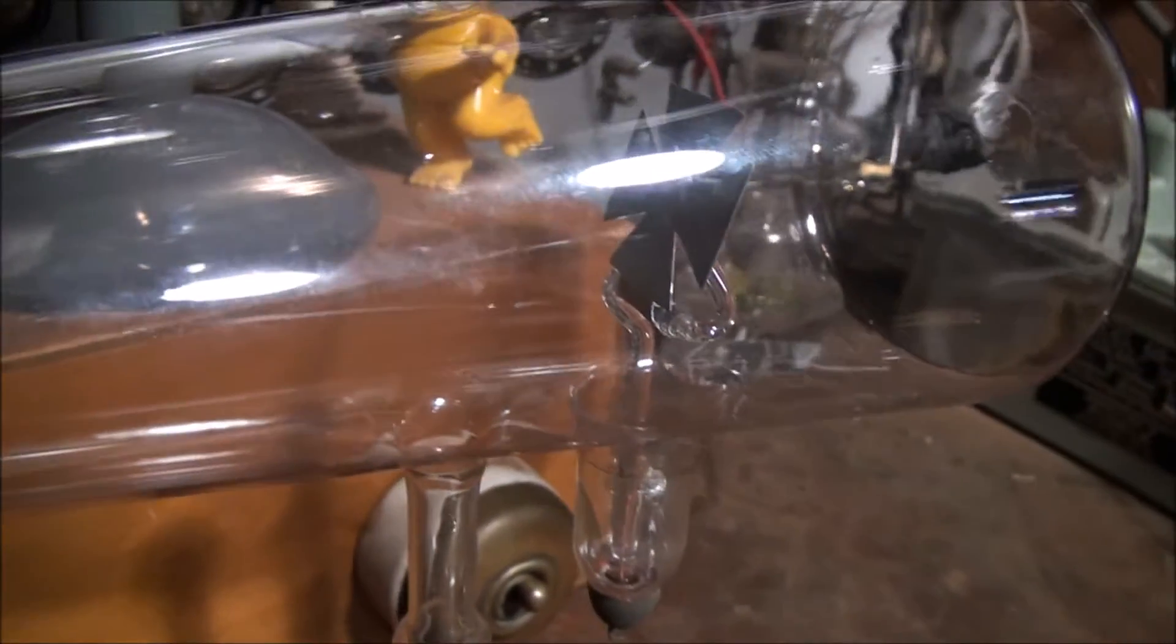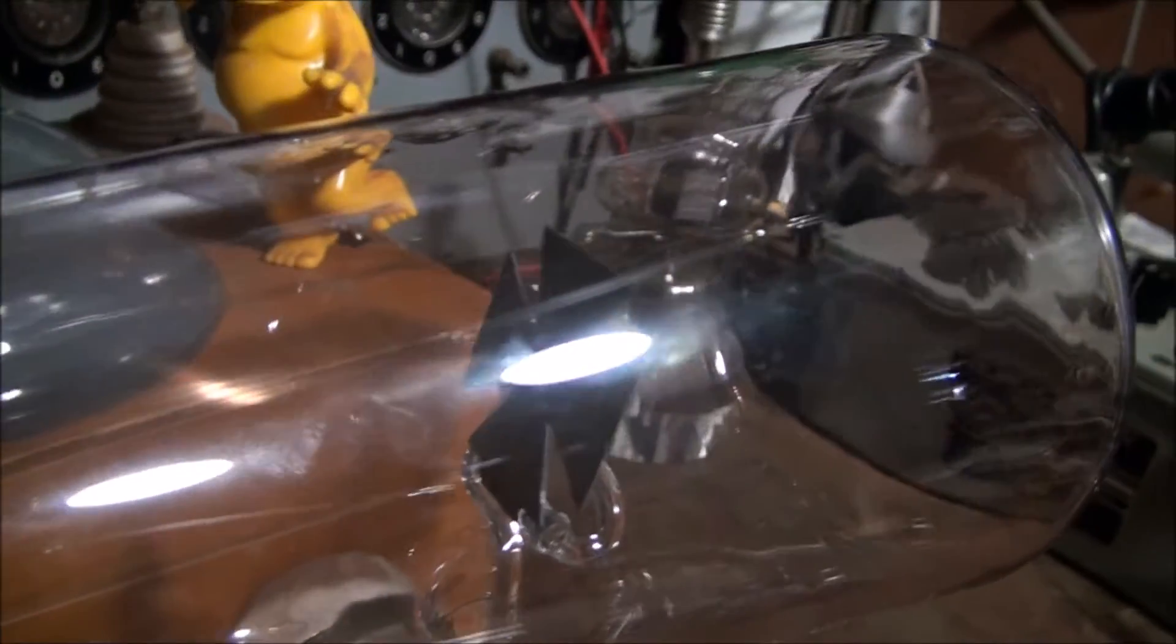But these ones here are quite old. And this one here is a Maltese cross tube. It has a metal target to cast a shadow on the fluorescent screen at the back.